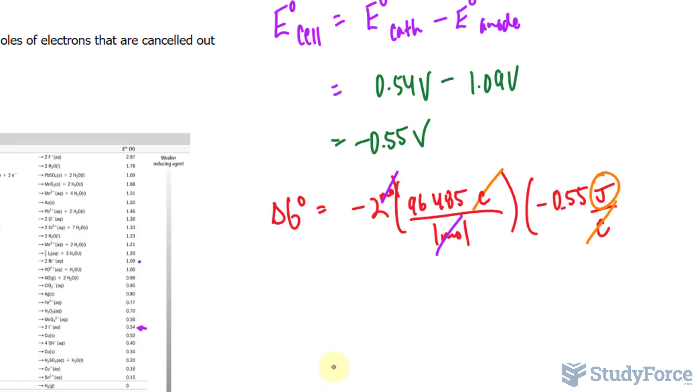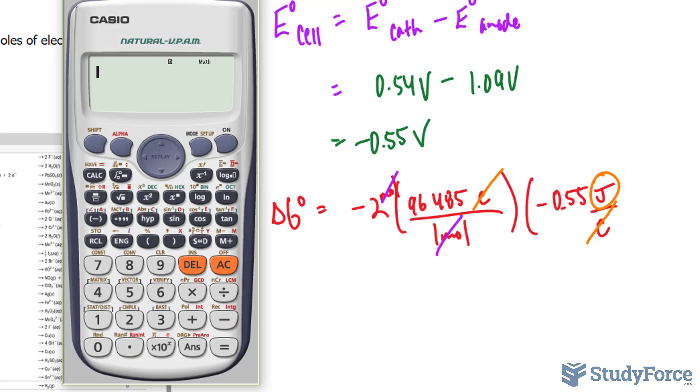Using our calculator, we need this number to two significant figures. So negative 2 times 96,485 times negative 0.55. And we end up with the following number. If we want this in kilojoules, we can divide this number now by 1,000. And that's easier to represent.